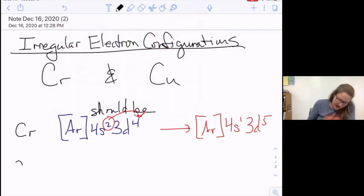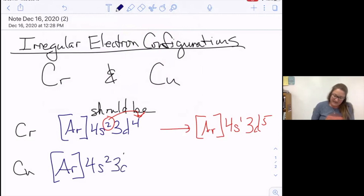If I wanted to consider copper, I'm going to find a similar sort of pattern. So writing the electron configuration of what I think it should be for copper, argon 4s2 3d9 based on its position on the periodic table.